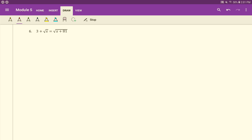Next one. Last one. Same thing here. We already have the radical isolated, so let's just go ahead and square both sides here. So we'll have 3 plus the square root of x times 3 plus the square root of x equals x plus 81.